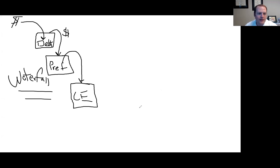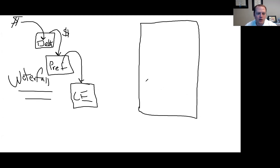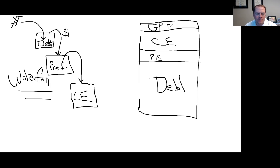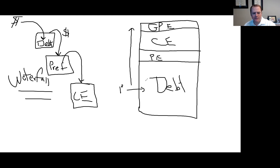In a capital stack, the majority is going to be the debt at the bottom. Then you have a small sliver for preferred equity, then common equity, and then your GP equity at the top. The priority is that the debt gets the highest priority — it gets paid first, then the preferred equity, then the common equity, and then the GP equity. The level of risk also goes up as you go up this particular level, which is why the debt usually has a lower interest rate — right now about two to three percent.